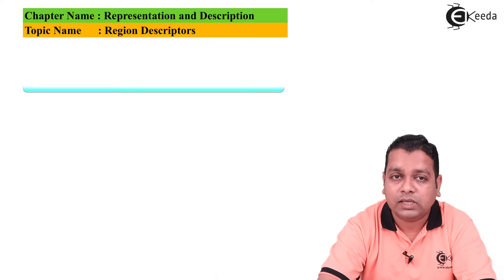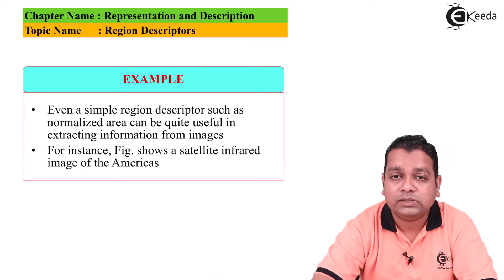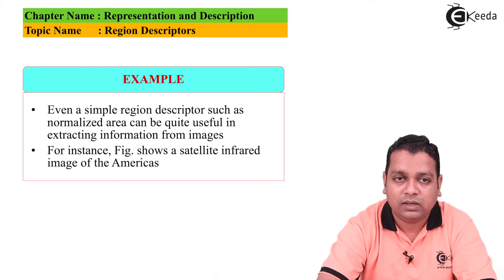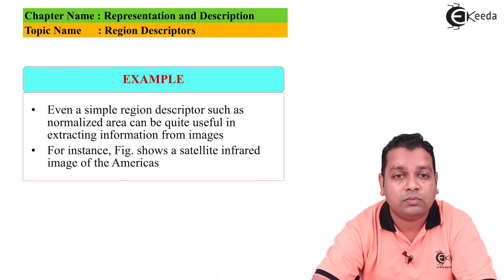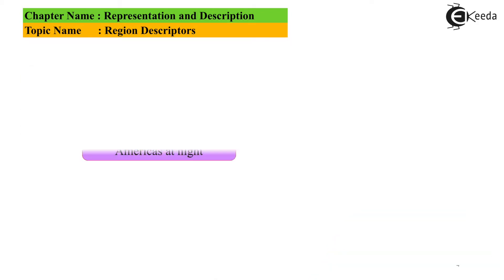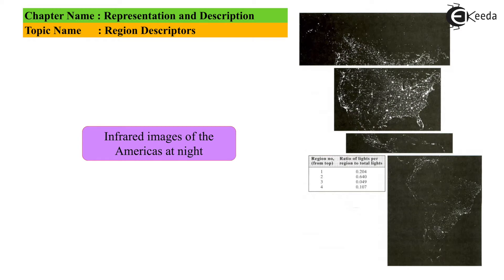Even a simple region descriptor such as normalized area can be quite useful in extracting information from images. For instance, let us visualize a figure that shows a satellite infrared image of the Americas, infrared images of the Americas continent at night, that we can see in this particular figure.